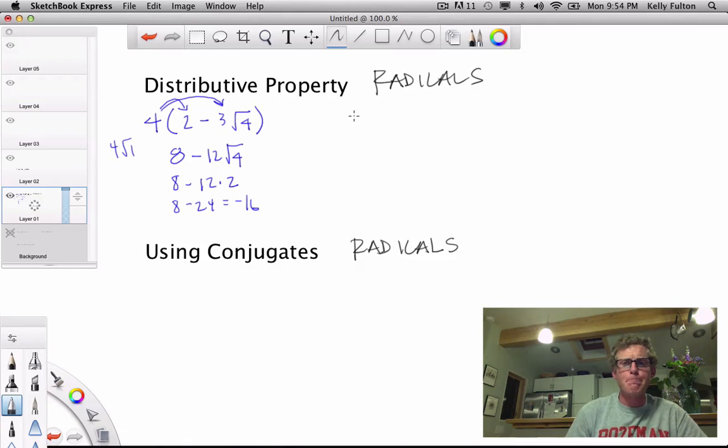Now another kind that we're going to look at that you'll probably see is, say you'll have something with the effect of 2 minus 3 root 5 times 3 plus 2 root 4.